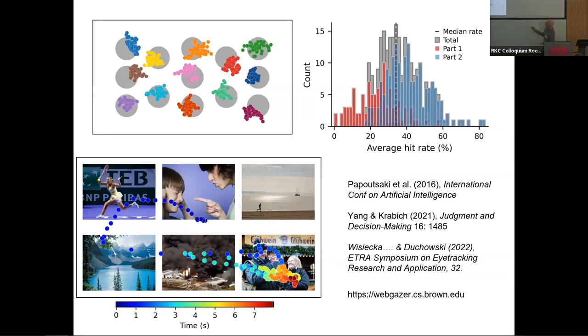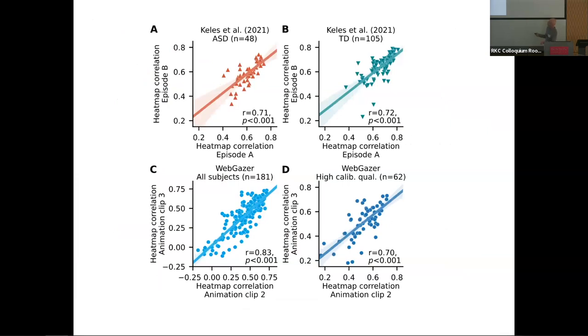As shown here, depending on where you set your threshold between initial calibration and subsequent validation, we typically exclude 30 to 50 percent of our participants. So that's a huge number. And of course, you would worry, we do worry about that introducing a bias. So if it's the case that people with autism tend to move more and give poorer calibration, then you're going to build in a huge bias there. So we have to continuously adjust this criterion to see if it has an effect on the results.